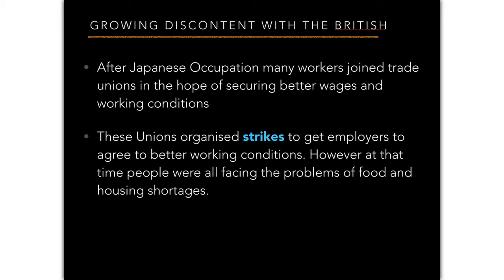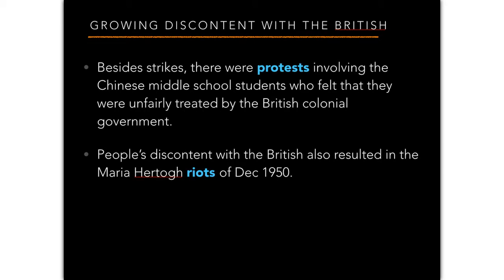The second big idea is growing discontent with the British. After the Japanese occupation, many workers joined trade unions hoping to secure better wages and working conditions. Trade unions organized strikes, but workers who were striking were not being paid, creating additional hardships alongside the existing food and housing shortages. There were also protests by Chinese middle school students who felt the British government had treated them unfairly. Discontent also resulted in the Maria Hertogh riots of December 1950.